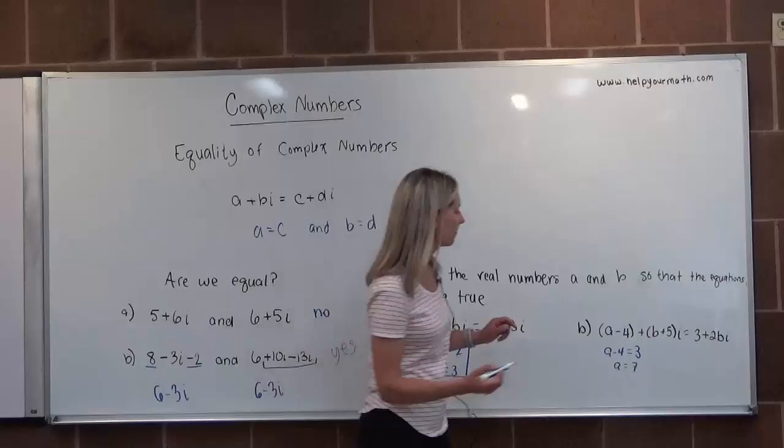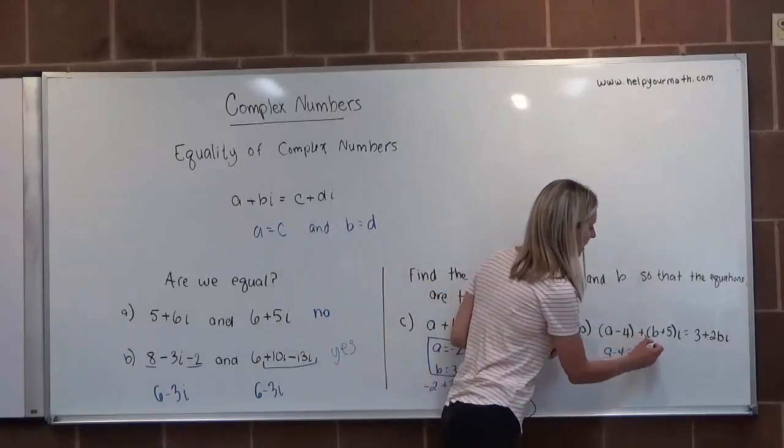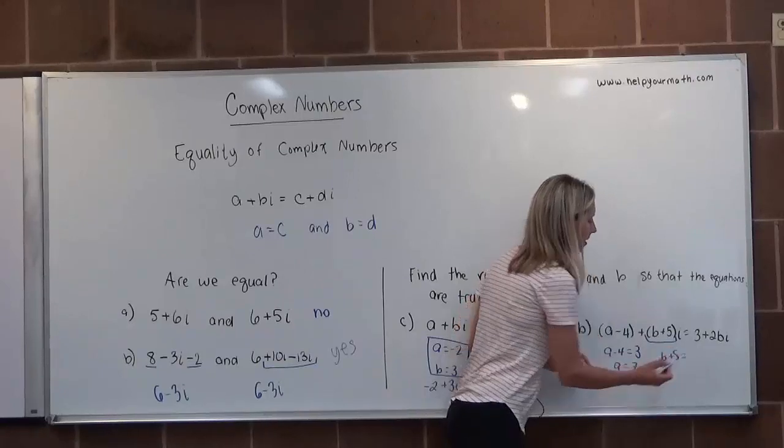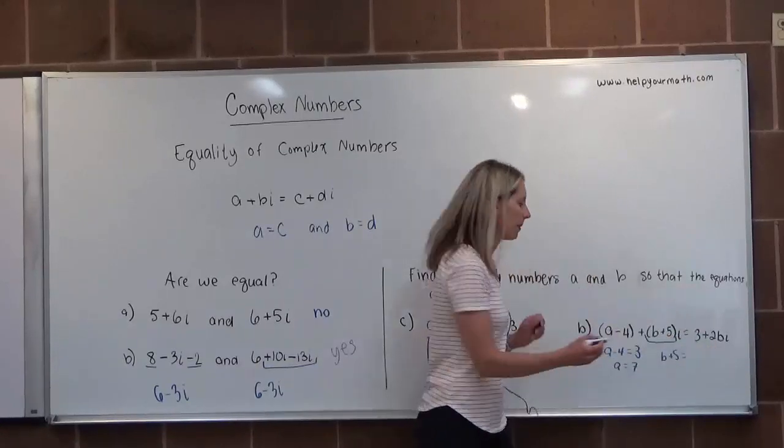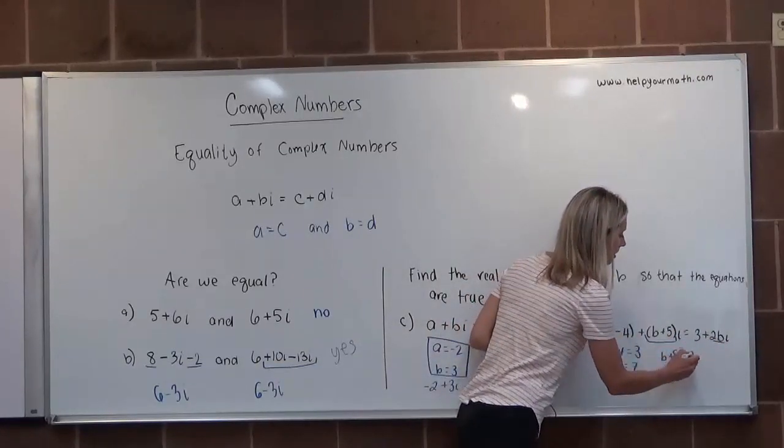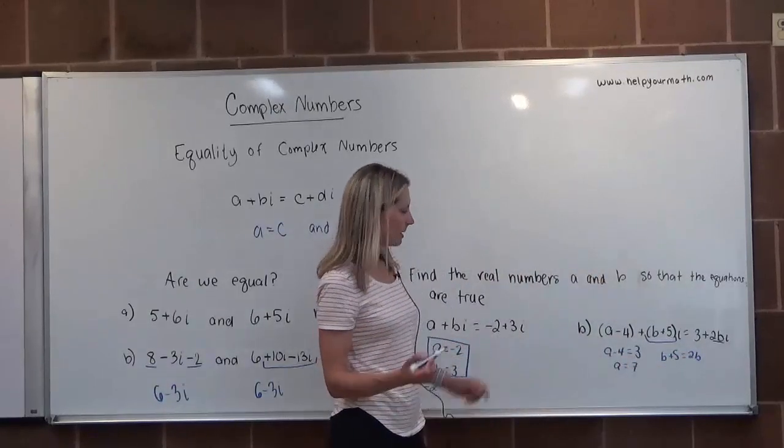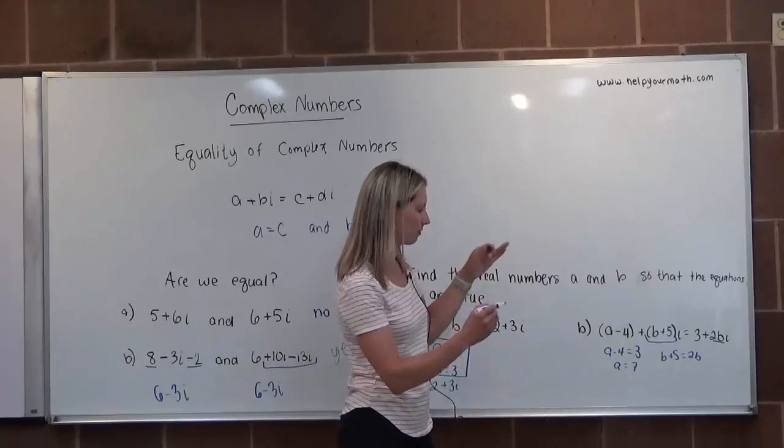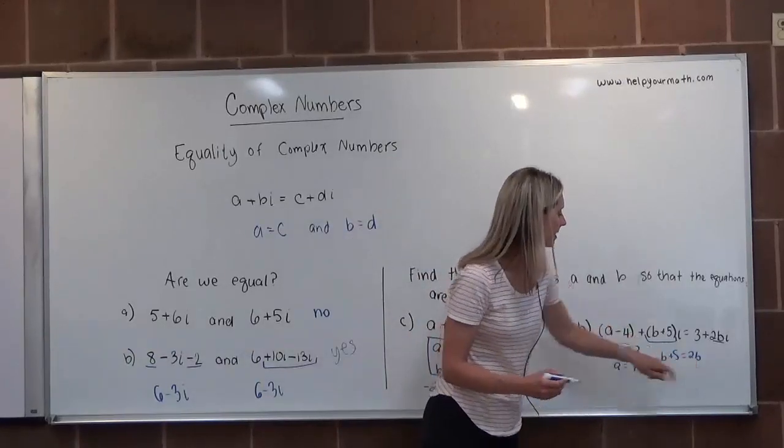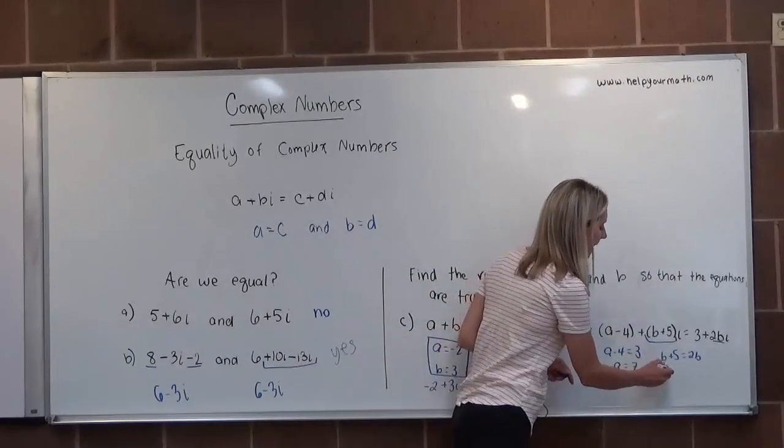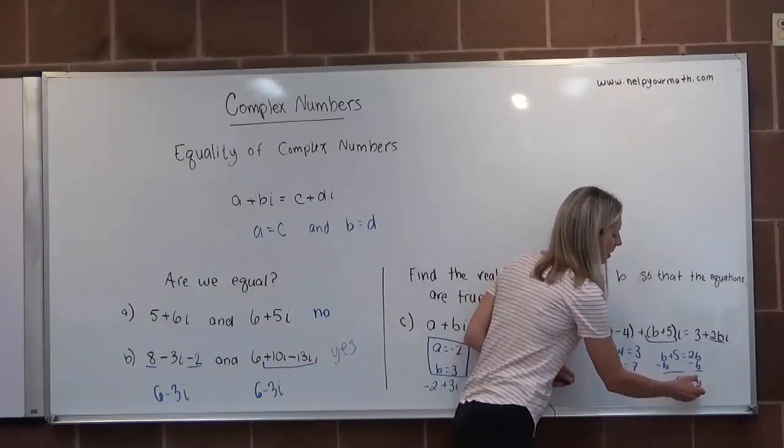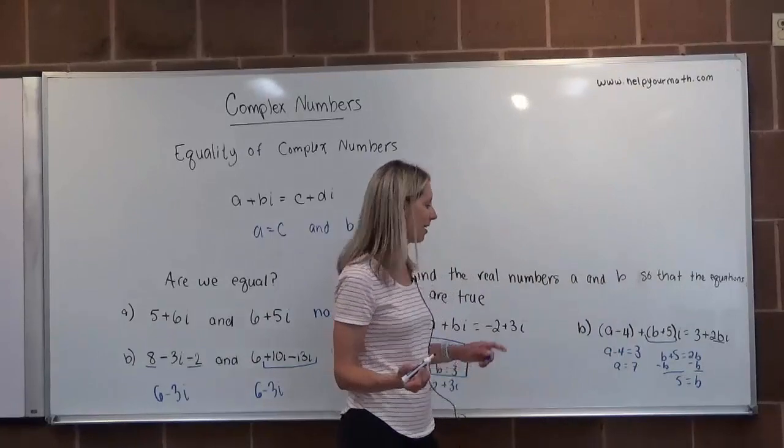Now what's the value of B? The coefficient of the complex part here is B+5, so B+5 must equal the coefficient of the complex part over here, which is 2B. This time we need to get the B's on one side. I'm going to take away B from both sides. Then I get 5=B, so B has to be 5.